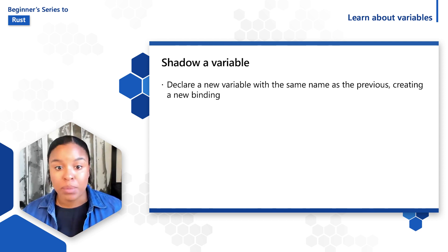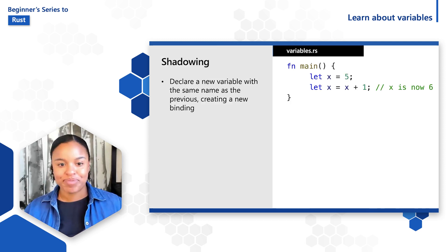The old variable with the original value still exists, but you can't refer to it in the scope anymore. Let's say we have a variable let x is equal to 5.